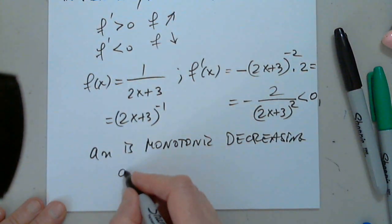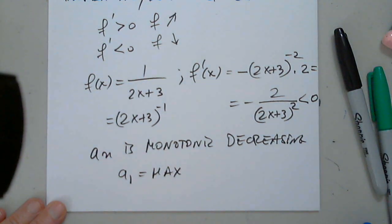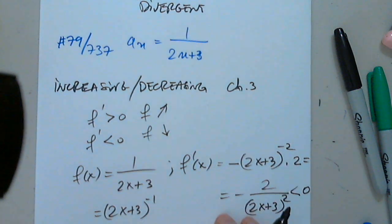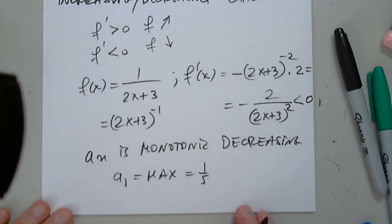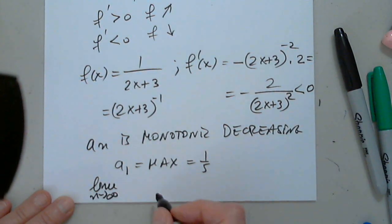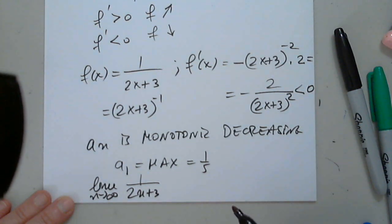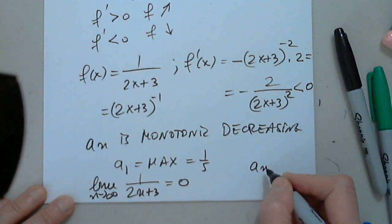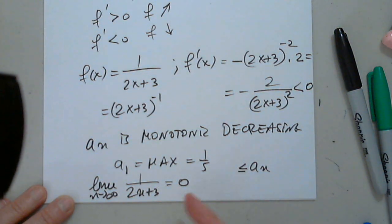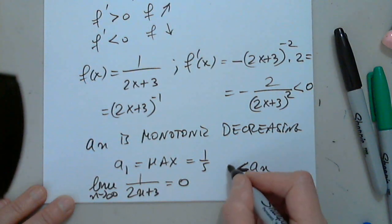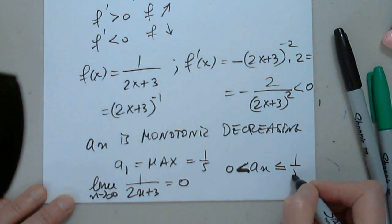If it's monotonic decreasing, then a sub 1 must be its maximum. So a sub 1 equals 1 over 5. Now let's find its limit: the limit as n approaches infinity of 1 over (2n + 3) is 0. So a sub n is strictly greater than 0 and less than or equal to 1/5.